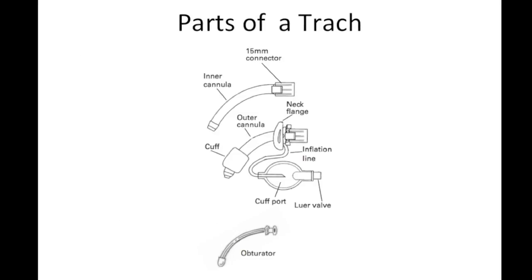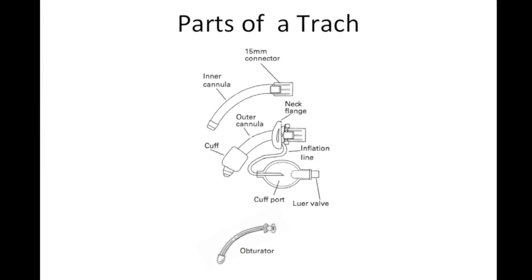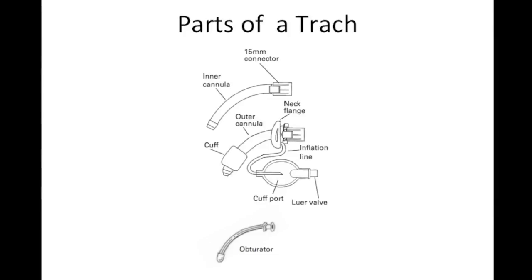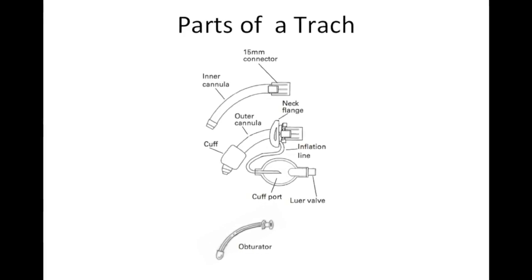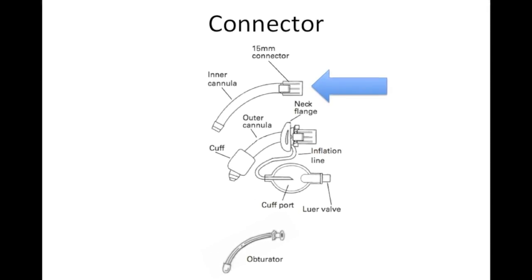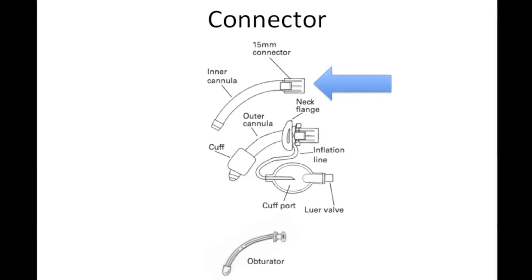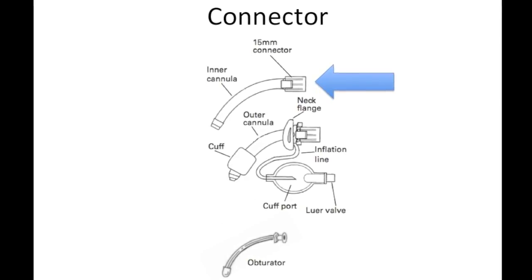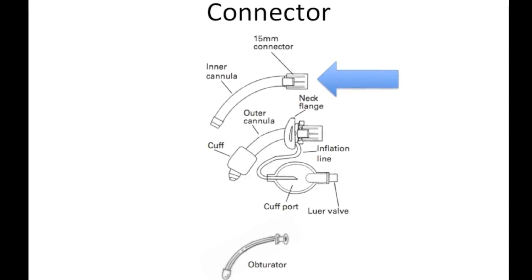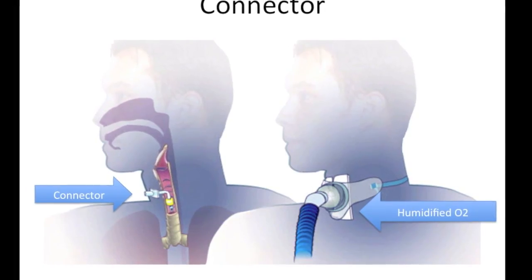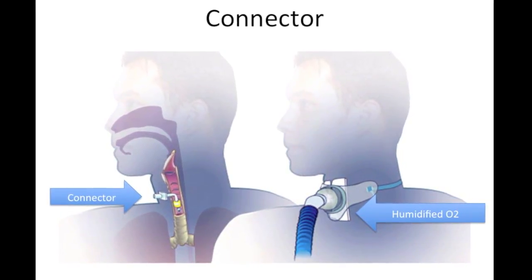The parts of a trach include the connector, the inner and outer cannula, the neck flange, the cuff, inflation line, cuff port, lower valve, and obturator. The connector is the outermost portion of the tracheostomy tube. Ventilator tubing, a manual resuscitation bag, or a speaking valve may be connected to the connector. Here's a picture of humidified oxygen being administered through the tracheostomy tube.